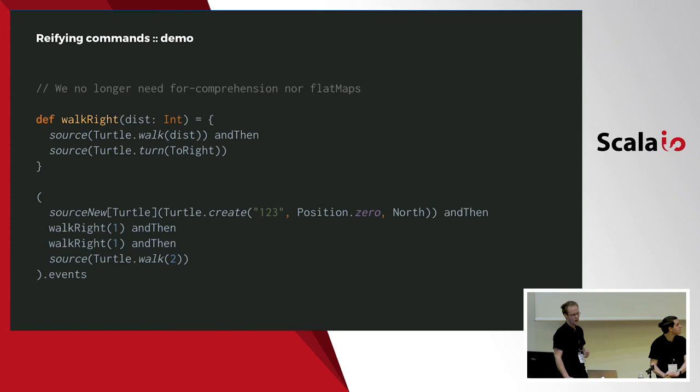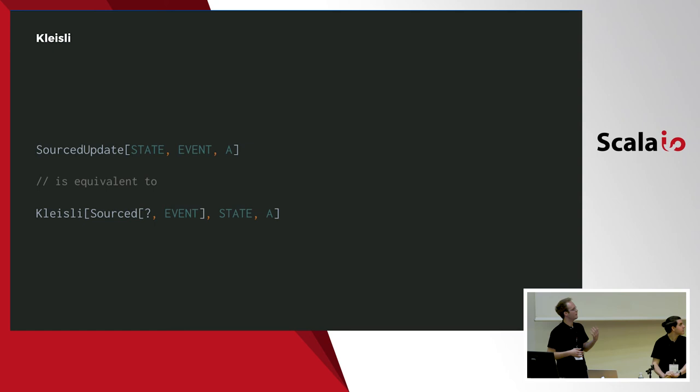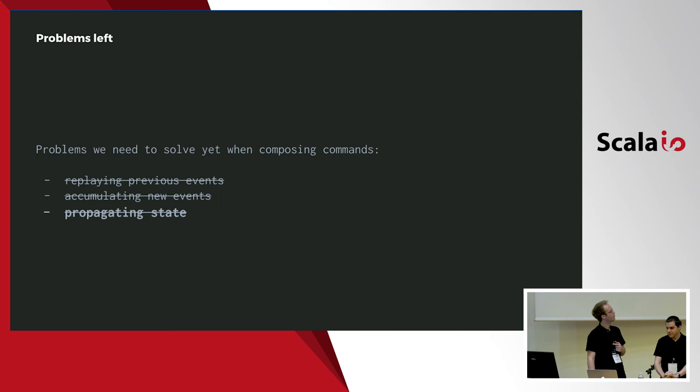As you can see, we no longer need nor can directly manipulate state. So we no longer risk introducing inconsistencies by not emitting the underlying events. For those of you who attended the talk this morning, you'll recognize that this is nothing different than a Kleisli — a composable function returning a monad. Once again, we're not discovering new type classes, we're just seeing a new use case on how to use them.